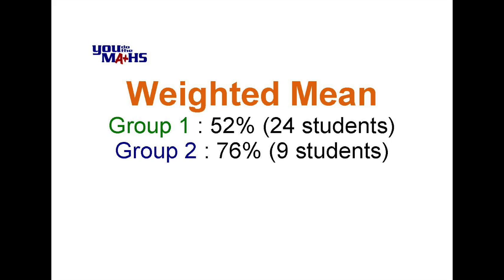Often we're asked to determine a weighted mean between two sets of scores. In this case we've got one group, which may be a class, and they've got an average score of 52% with 24 students. We've got a second group with an average of 76% or a mean of 76% and they've got nine students. So what we want to do is work out a mean for the two groups combined.